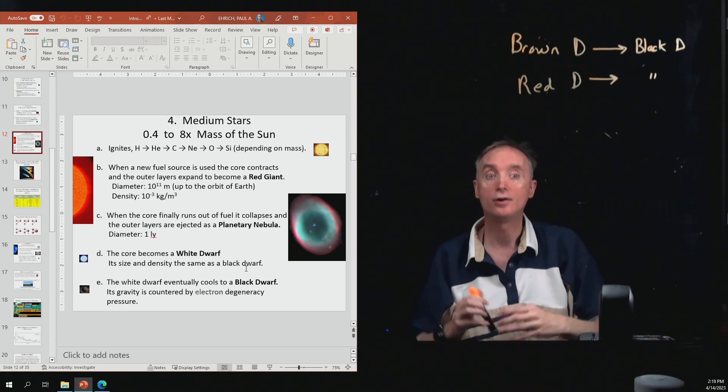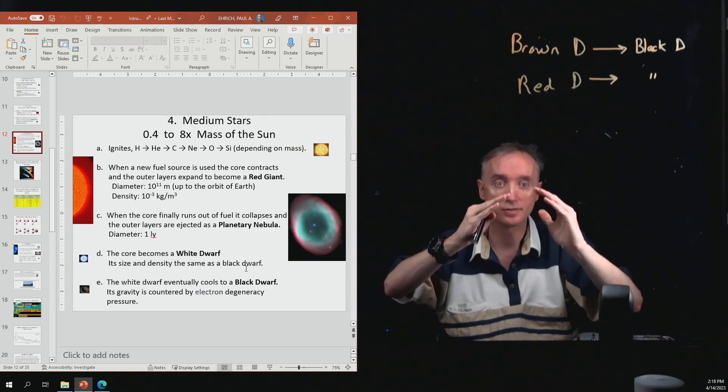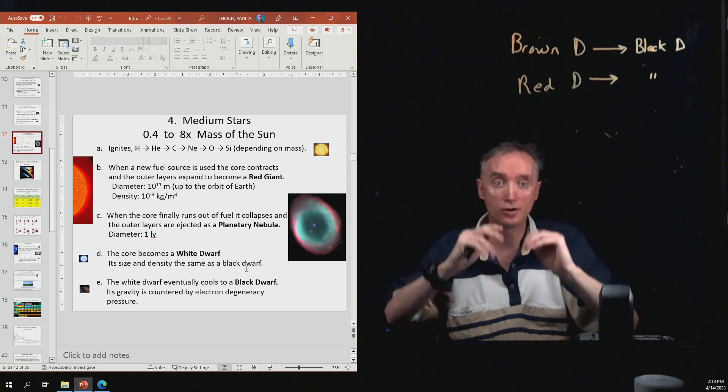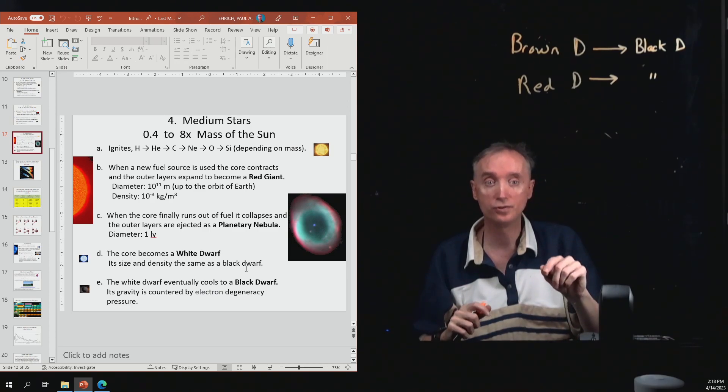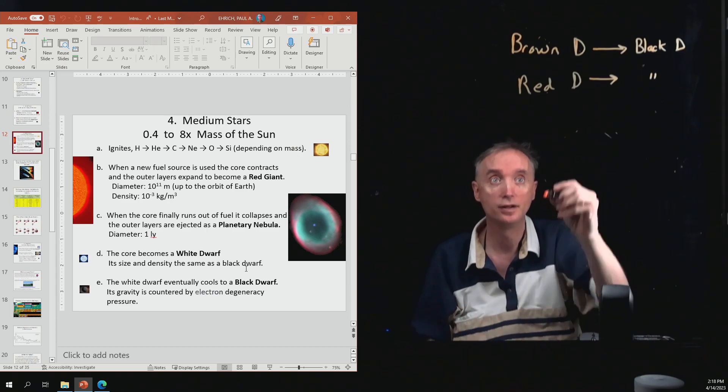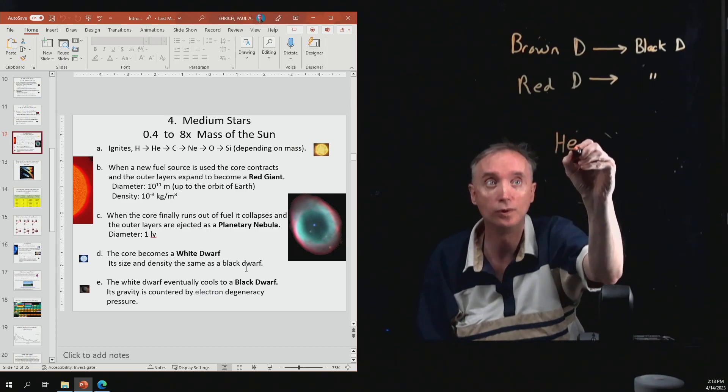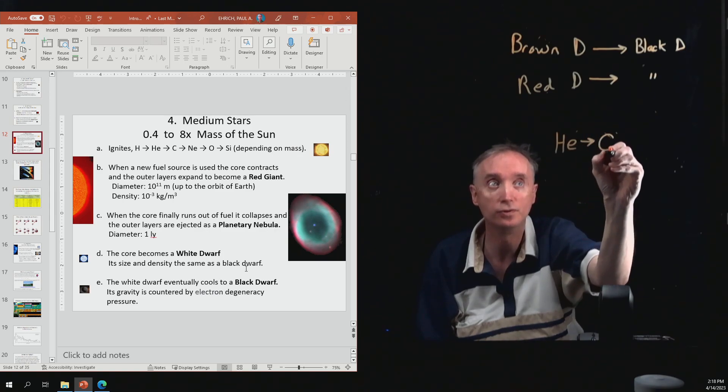Okay, now as it collapses, the pressure goes up, the temperature goes up, and if the temperature can get up to a hundred million Kelvin, then the helium will be converted into carbon.